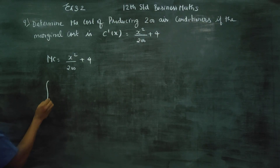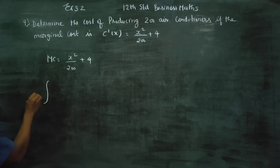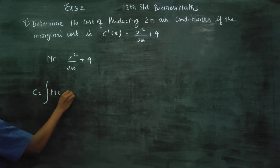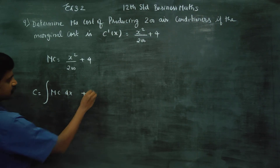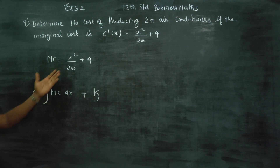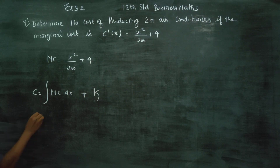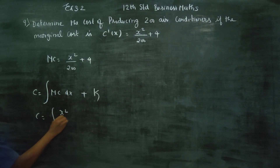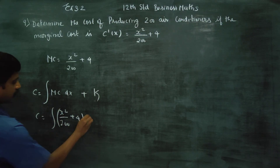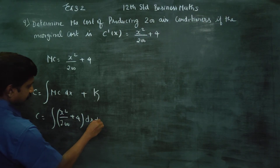Using integration, cost is equal to integration of MC dx plus K. This is our formula. We integrate the marginal cost: cost is equal to integration of x squared by 200 plus 4 into dx plus K.